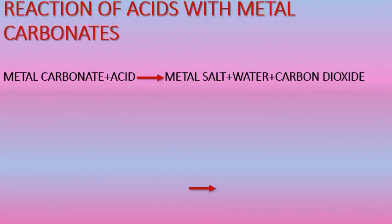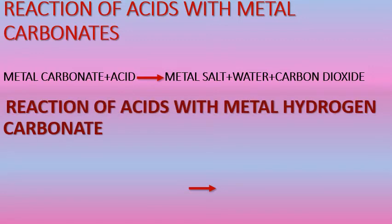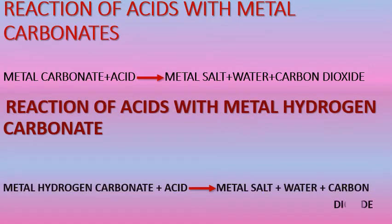Let's see how acids react with metal carbonates. Acids react with metal carbonates to form the respective salt, water, and carbon dioxide. In the same way, acids react with metal hydrogen carbonates to form the respective salt, water, and carbon dioxide.